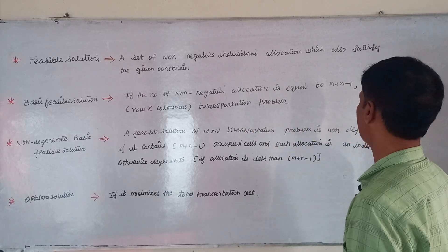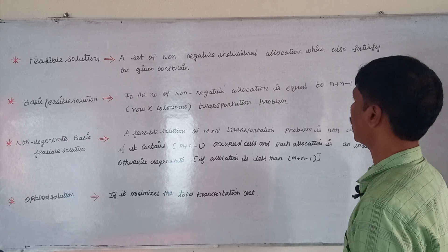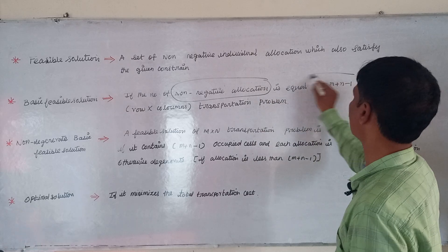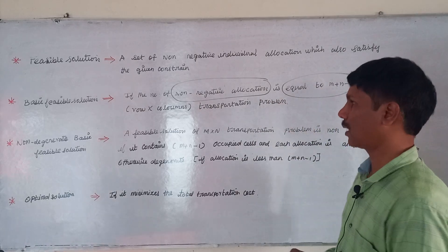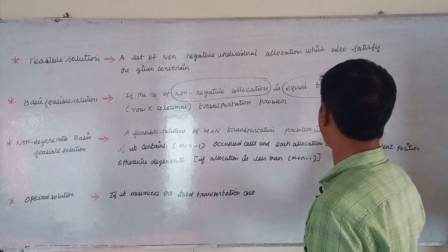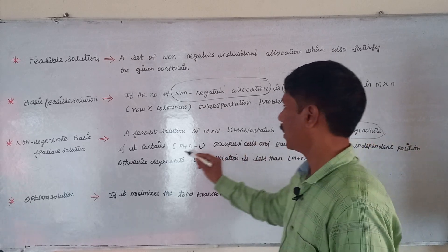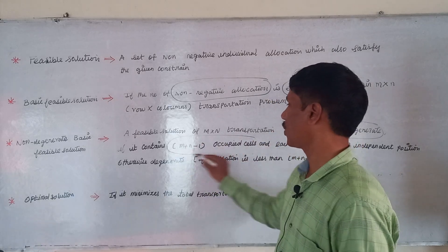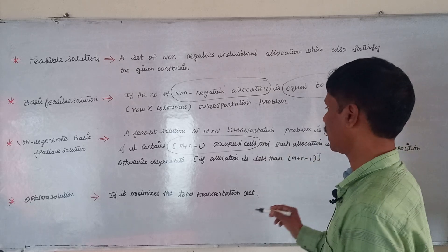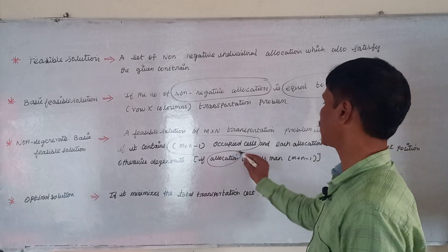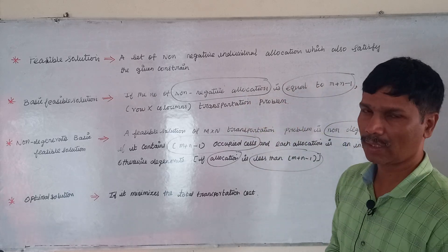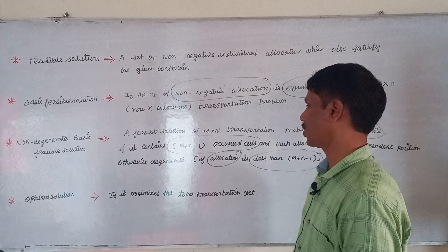To summarize: a non-degenerate basic feasible solution has exactly m plus n minus 1 non-negative allocations. If the number of occupied cells equals m plus n minus 1 and each allocation is in an independent position, the solution is non-degenerate. If the number of allocations is less than m plus n minus 1, the solution is degenerate.